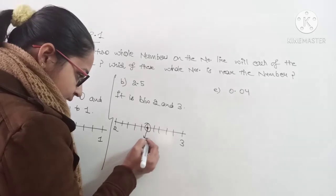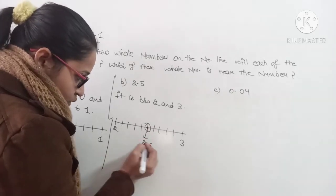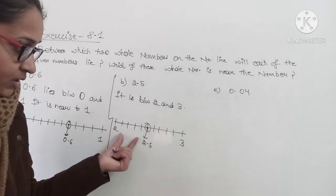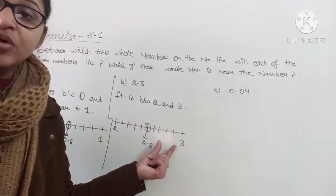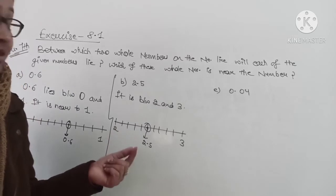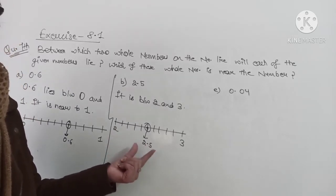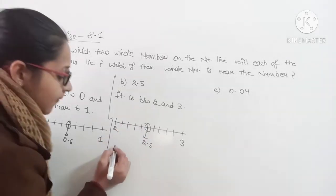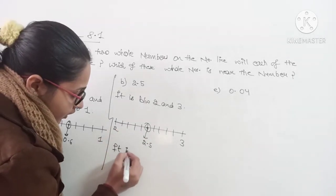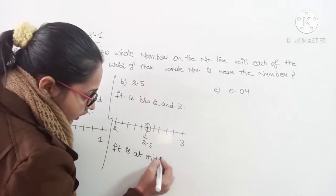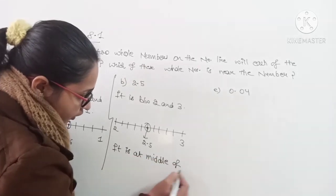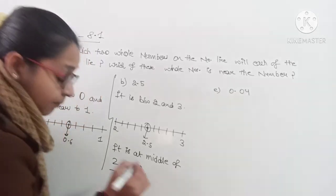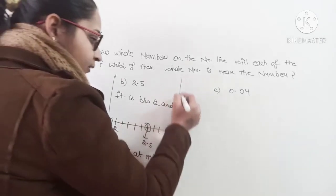Now calculate the distance between 2 and 2.5 and between 2.5 and 3. You will see that the distance between these two numbers and the distance between these two numbers is the same. It is at middle of these two numbers. So both numbers are at same distance, so you will write it is at middle of 2 and 3. It is at completely middle position between 2 and 3.